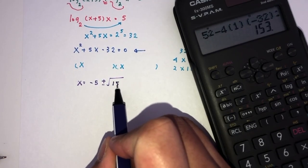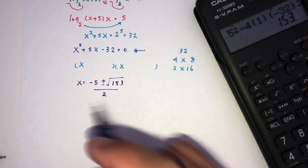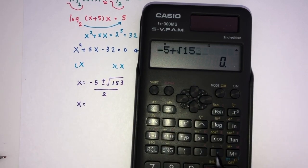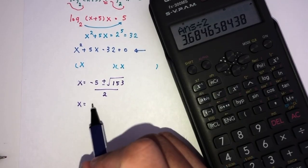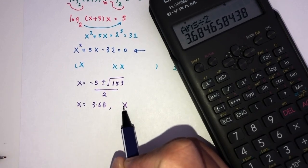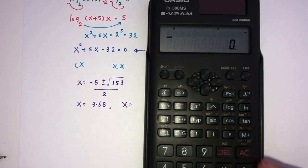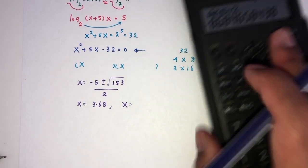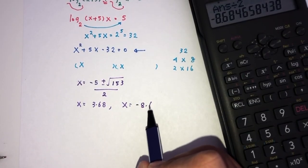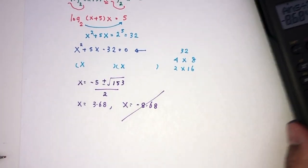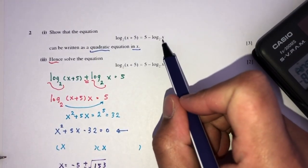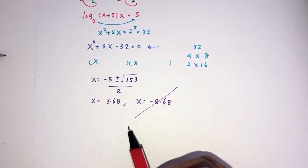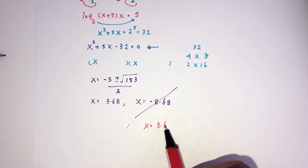For any quadratic, if you don't want to waste time factorizing, use the formula directly. That gives 153 divided by 2a, which is 2. So x can be minus 5 plus root of 153 divided by 2, which is 3.68 correct to 3 significant figures. Or it could be minus 5 minus root of 153 divided by 2, giving minus 8.68. But we must reject this value because log of x cannot take a negative value. So the only possible value is x equals 3.68.